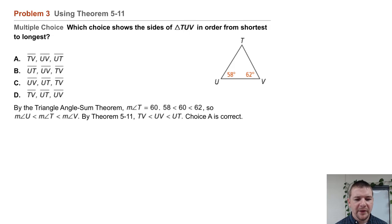By the triangle angle sum theorem, the measure of angle T equals 60. 58 is less than 60, which is less than 62. So the measure of angle U is less than the measure of angle T, which is less than the measure of angle V.